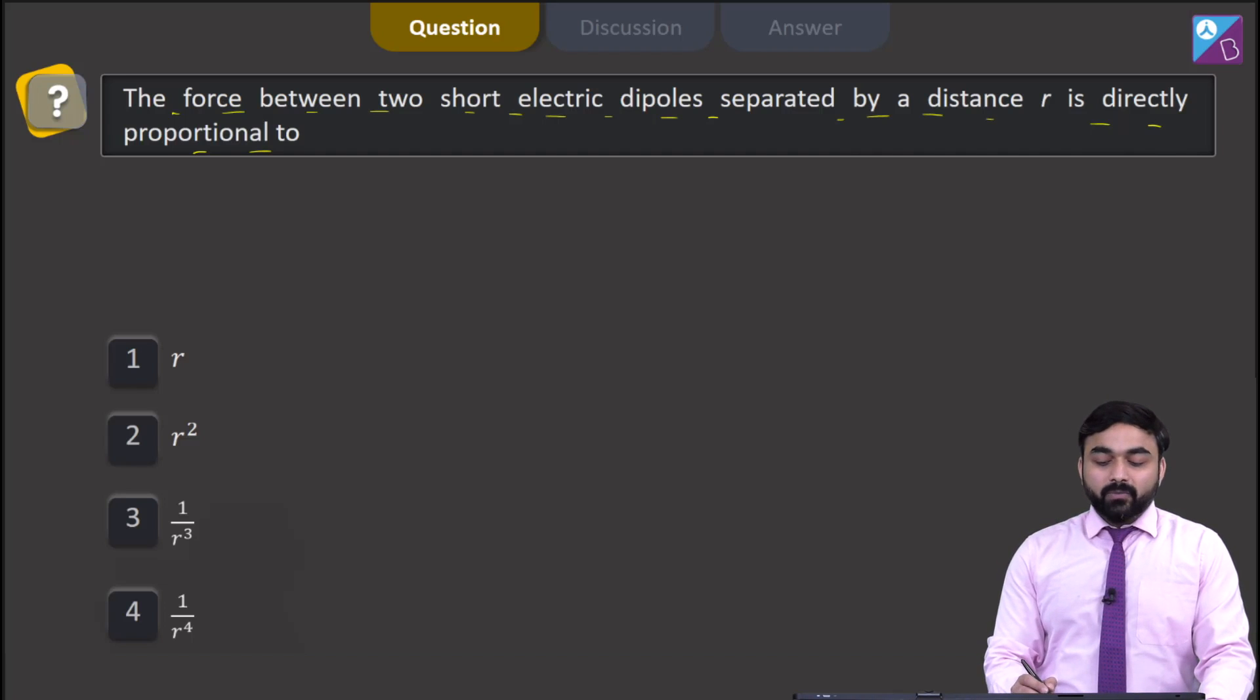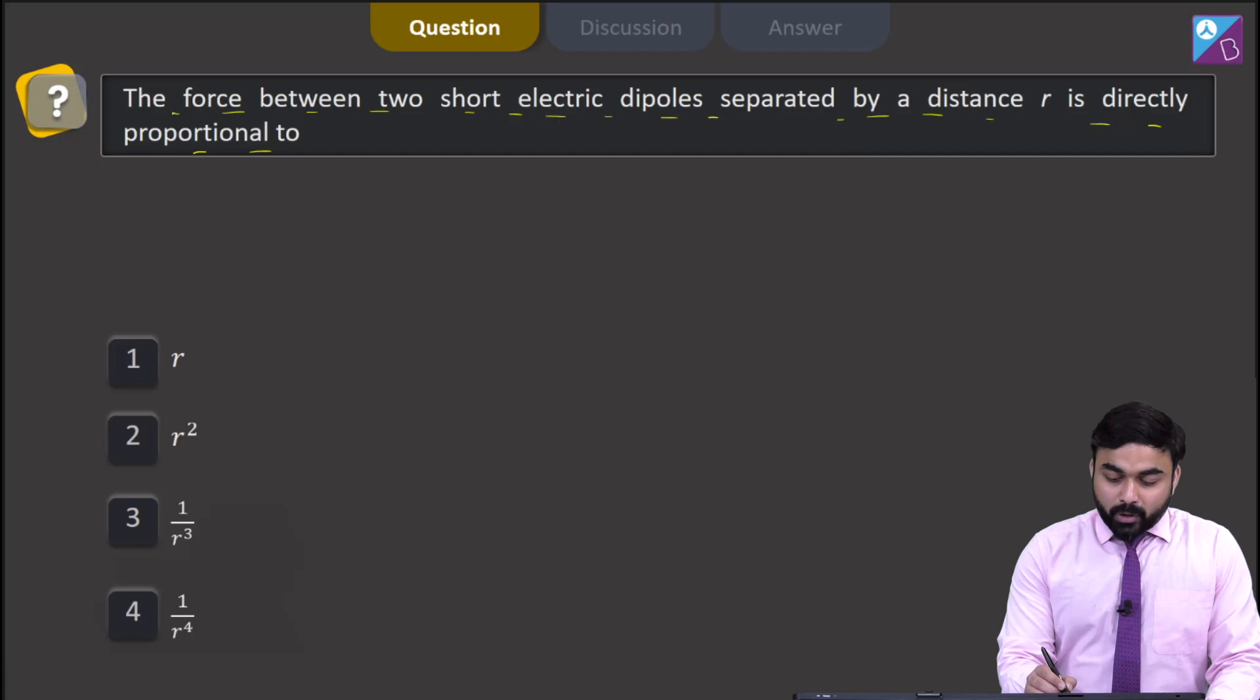These are the four options among which we need to choose the correct answer for force between two electric dipoles separated by a distance r is directly proportional to what. So, for two short electric dipoles,